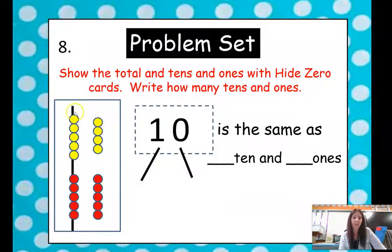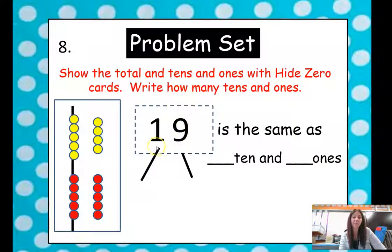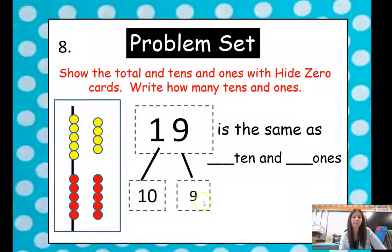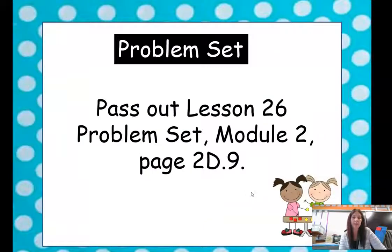We have one more to look at. We've got 10 and look how many we have here: 1, 2, 3, 4, 5, 6, 7, 8, 9. So we have a group of 10 and then we have 9 more. So 19 is the same as 1 ten and 9 ones. All right, my friends, that's it for today. I hope you enjoyed our lesson. You can go ahead and get started on your exit ticket. I'll see you guys tomorrow. Bye!